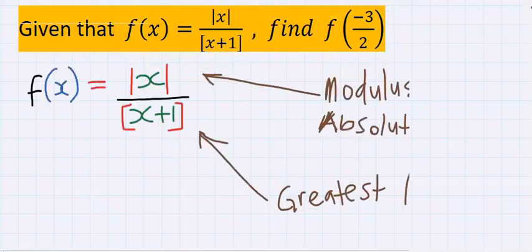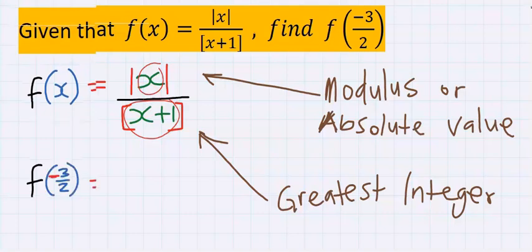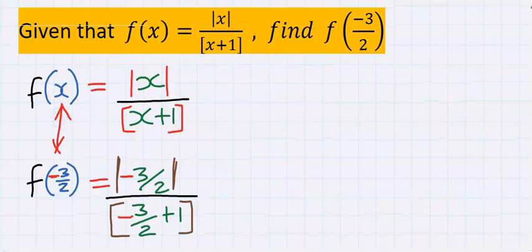To solve this problem, the numerator has modulus or absolute value function, while the denominator is enclosed in greatest integer function. Wherever you see x, you replace it with minus 3 over 2, as given in the question.